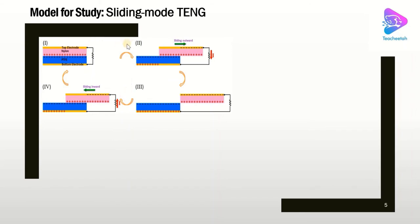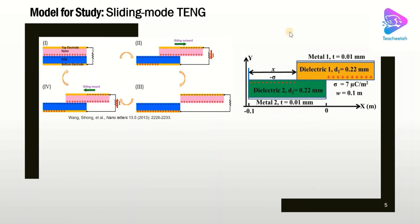Let's see how we can model a sliding mode TNG. We have two dielectrics: one with positive affinity and one with negative affinity. We suppose that a charge density of 7 µC per meter squared is generated after they are in contact — this is a standard assumption. In reality it may degrade over time, but ideally we suppose a charge density remains on the surface. Remember, at least one material should be a dielectric or insulator. We can also have one dielectric and one metal — metal-dielectric is another configuration for TNG.